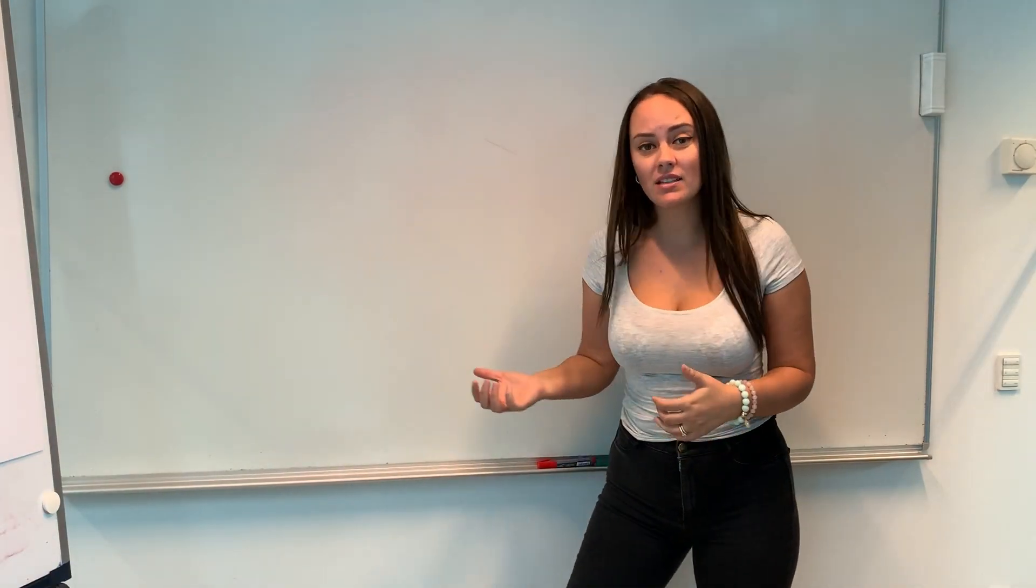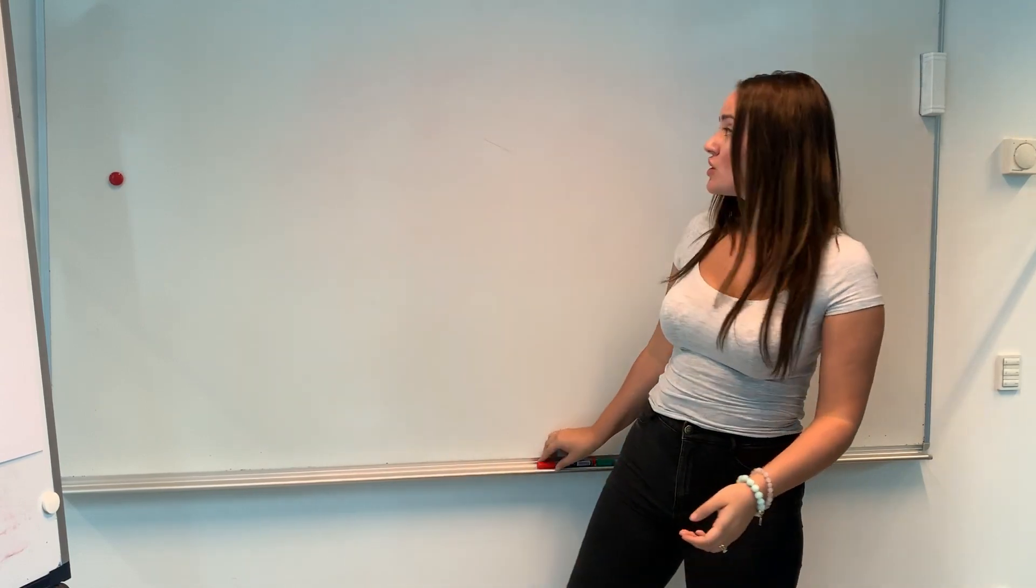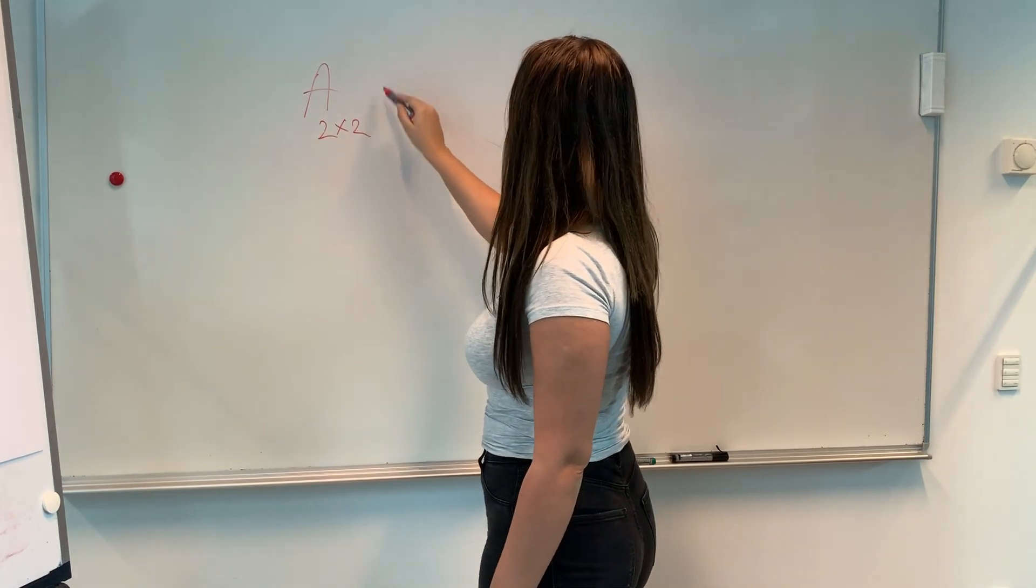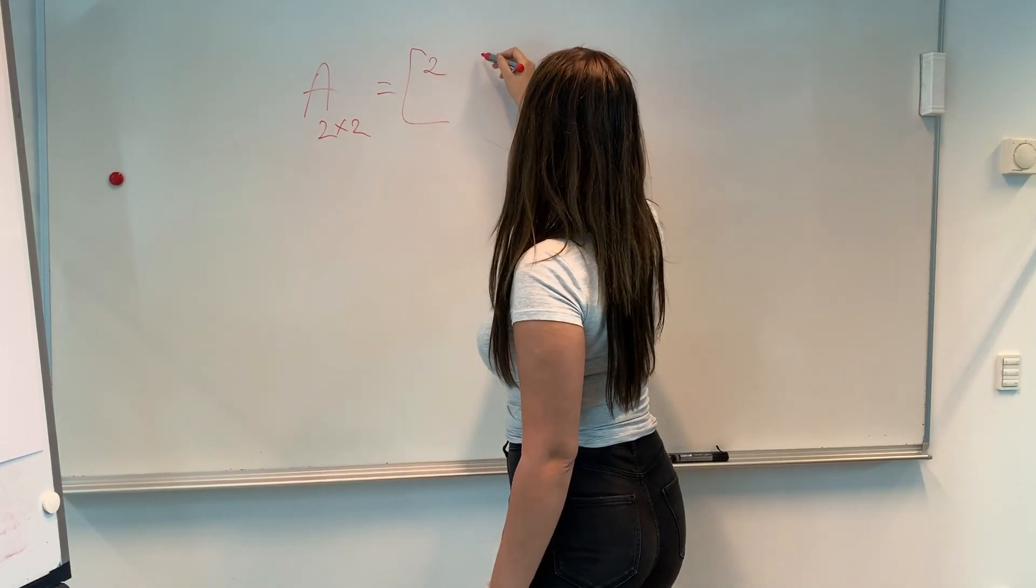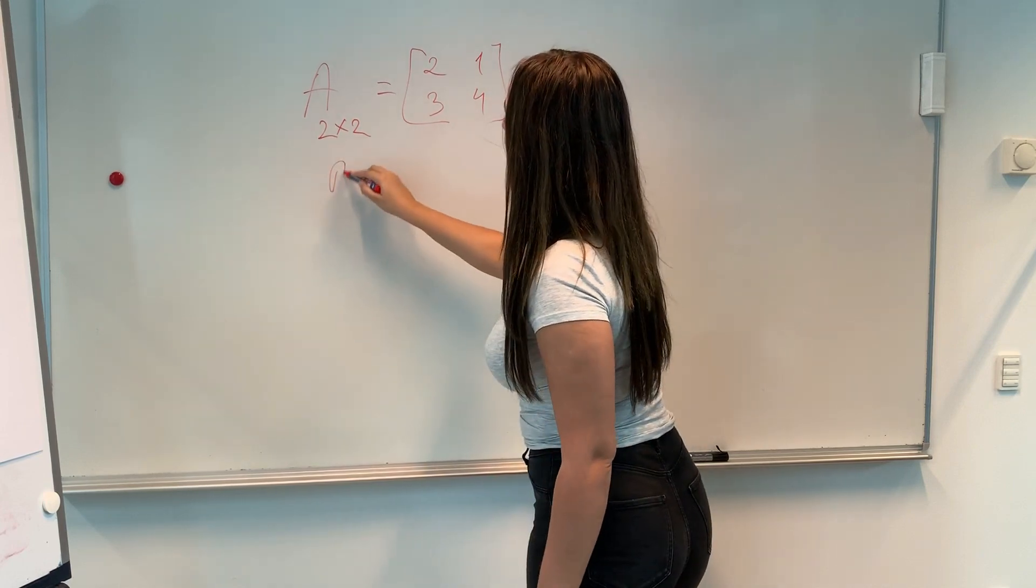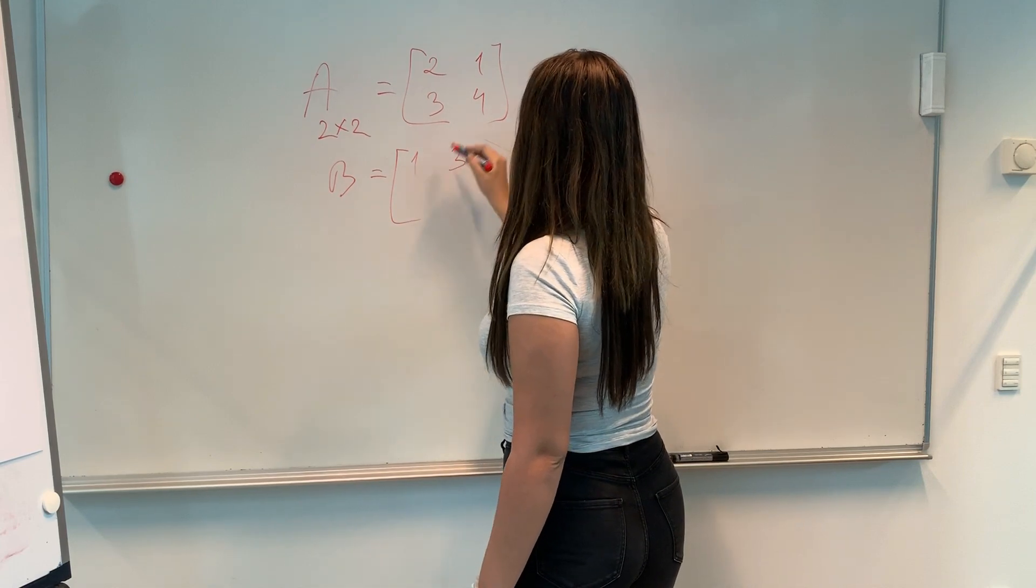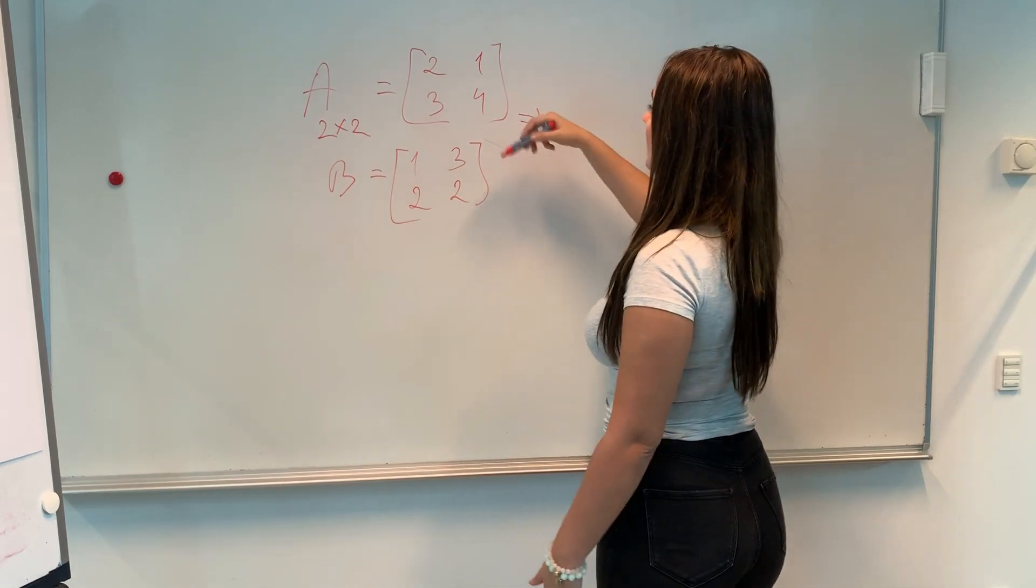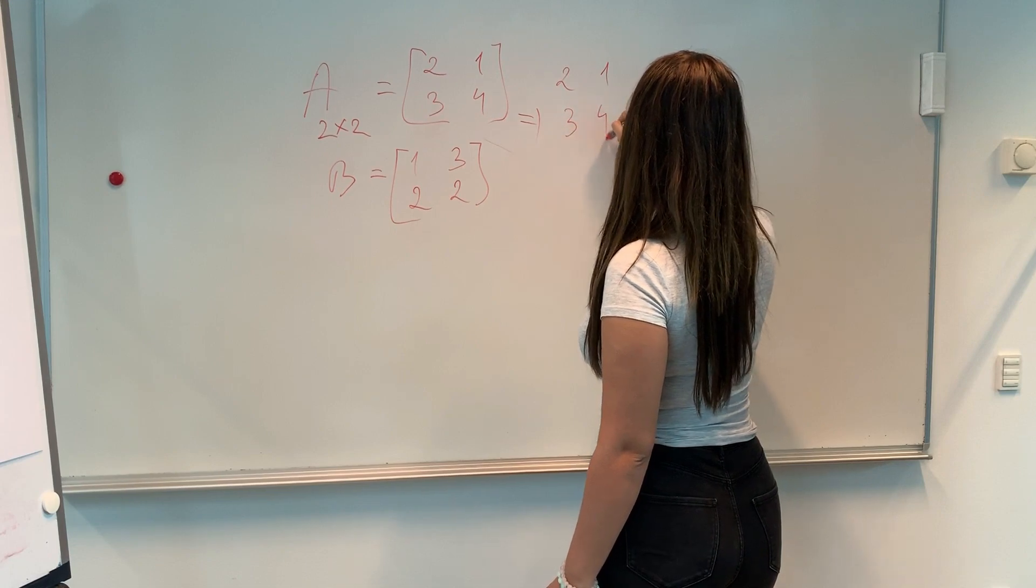And now that we got some basics learned, let's try to see how we can actually add two matrices. So let's take matrix A and that is two by two matrix. And I'm going to give it the next element. So two, one, three, and four.